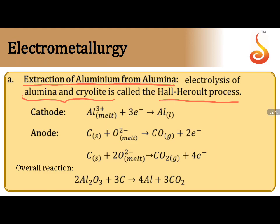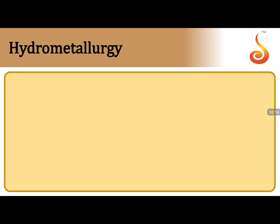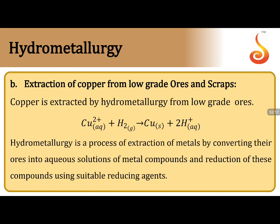Extraction of aluminium from alumina (Hall-Héroult process): alumina is mixed with cryolite, which decreases the melting point and increases the conductivity (since alumina is a poor conductor). At cathode: Al³⁺ is reduced to Al. At anode: CO and CO₂ are released; CO is further oxidized to CO₂. Overall reaction: Al₂O₃ is reduced to Al giving CO₂.